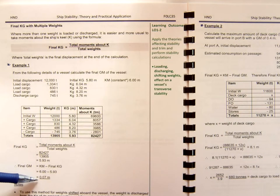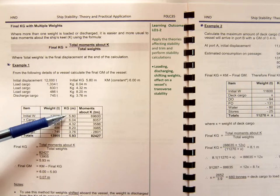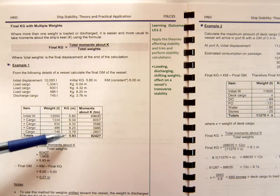That's how we would get the final GM by using the tables. You can see that initially our KG started off at 5.8 centre of gravity, and now it's gone to 5.93. That in effect is what we've calculated.